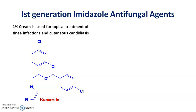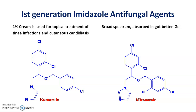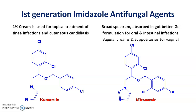Other examples of first generation antifungal agents include econazole: 1% cream is used for treatment of tinea infections and cutaneous candidiasis. Miconazole is a broad spectrum agent which is absorbed in the gut. Gel formulation is used for oral and intestinal infections, whereas vaginal creams and suppositories are used for vaginal candidiasis.